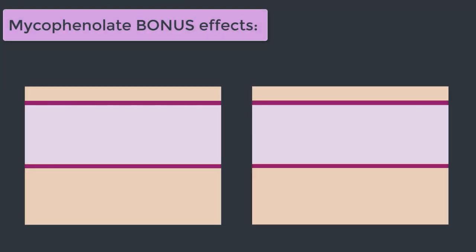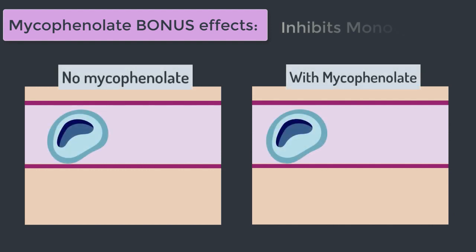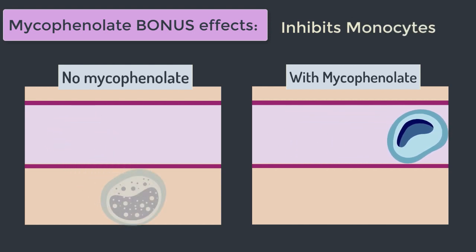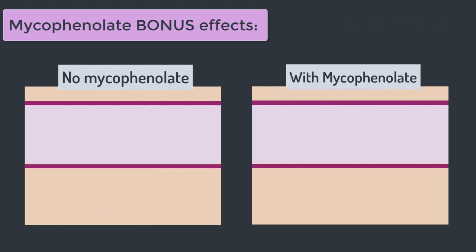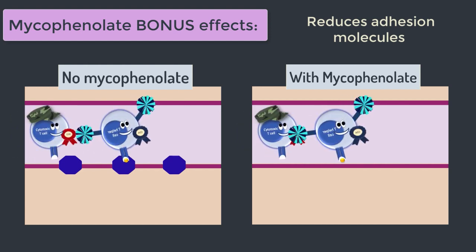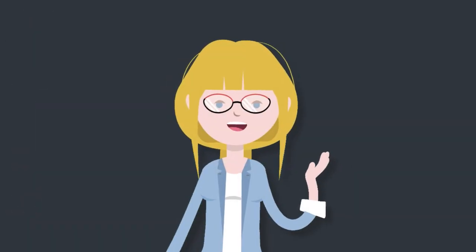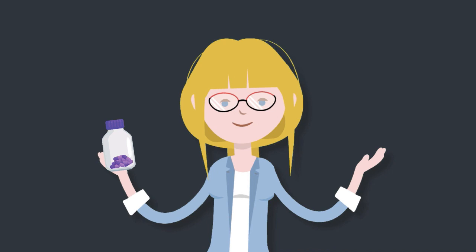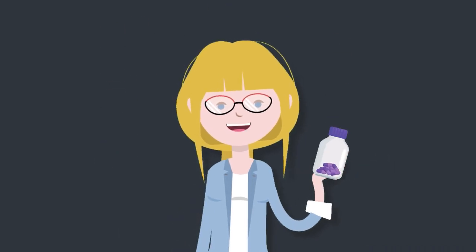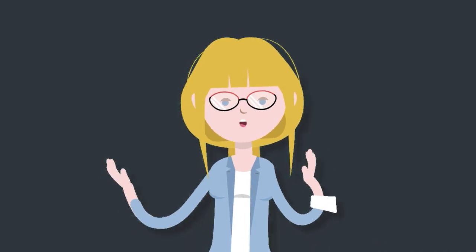Aside from inhibiting the cell cycle of T cells and B cells, mycophenolate has also been shown to inhibit monocytes, meaning fewer monocytes will transform into macrophages in tissues. Additionally, mycophenolate has been shown to influence the amount of adhesion molecules expressed by endothelium, which ultimately reduces the strength of an immune response at sites of inflammation. The combination of these effects makes mycophenolate a wonderful immunosuppressant used in transplant medicine and in treating a whole host of autoimmune conditions.